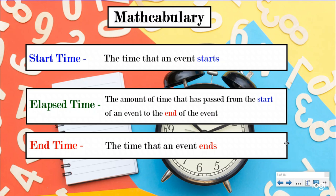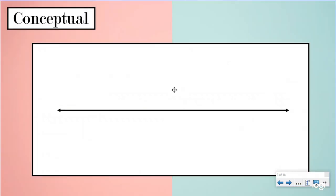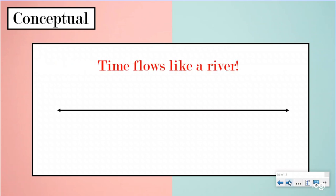Let's take a look at a story to help us visualize these three vocabulary words in action. We have a timeline, and we view a timeline as a number line in math because time flows like a river - time is never ending. It just continues to move like our numbers. When we look at elapsed time questions, we view time on a number line to label our start, end, and elapsed time.